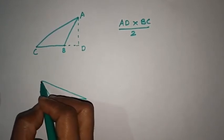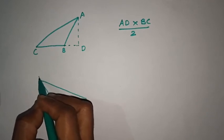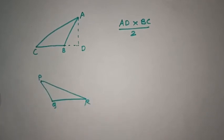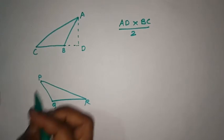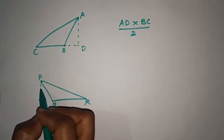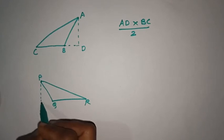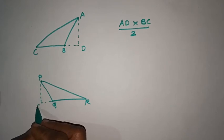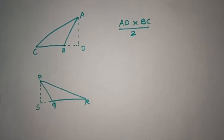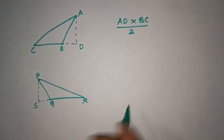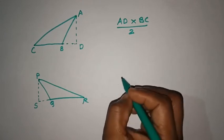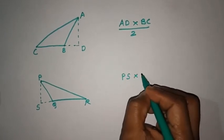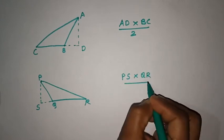We will take a look at this triangle P, Q, R. We will take a look at this perpendicular height and point S. How do we find the area of this triangle? We will take a look at this triangle: P, S into Q, R by 2.